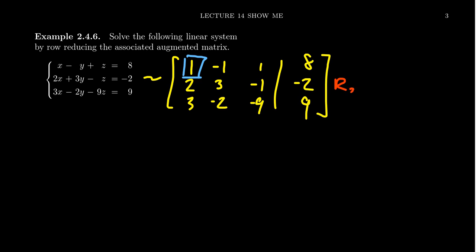We're going to replace row 2 with row 2 minus 2 times row 1. So 1 times -2 is -2. -1 times -2 is +2. We're going to get a -2 here, and -2 times 8 is -16. To get rid of the 3, we replace row 3 with row 3 minus 3 times row 1. So we get -3, +3, -3, and -3 times 8 is -24.